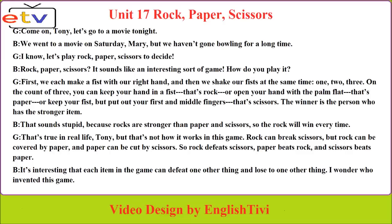Rock can break scissors. But rock can be covered by paper, and paper can be cut by scissors. So rock defeats scissors, paper beats rock, and scissors beats paper. It's interesting that each item in the game can defeat one other thing and lose to one other thing.